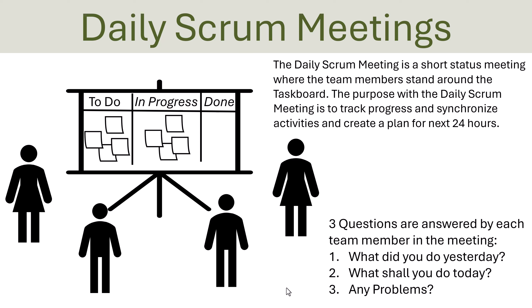During the sprint, the team also has daily Scrum meetings. The development team comes together typically early in the morning and stands in front of the task board. Each team member answers three questions: What did you do yesterday? What shall you do today? And do you have any problems? Each team member shows the tasks done since the last meeting and says which tasks they will focus on until the next meeting. That's the daily Scrum meeting, which is an important part of the Scrum method.